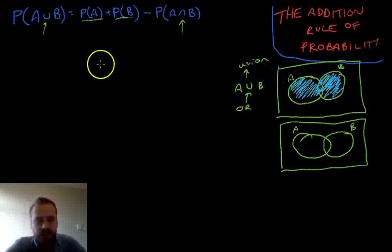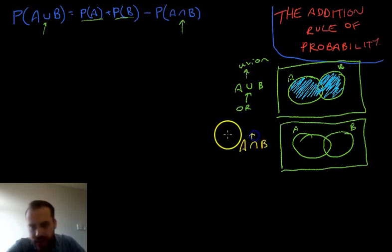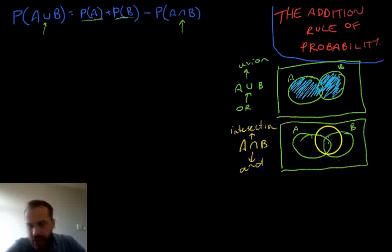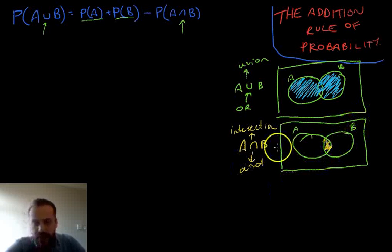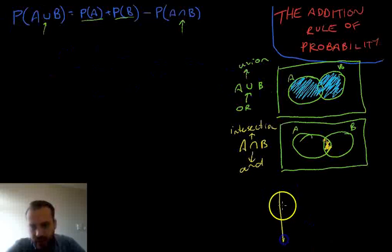Now the other thing in this formula that you might not remember is this piece here, A intersection B. And let's just draw A intersection B. Now remember that A intersection B, that's intersection. And the easiest way to think about intersection is and. And it's this section in here. Now hopefully you can see what's happening in this formula. I'll break it down for you with a third Venn diagram.